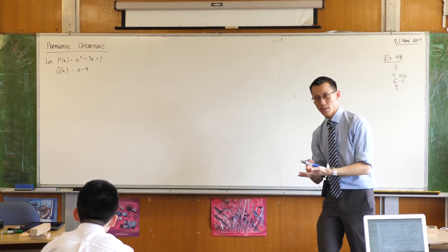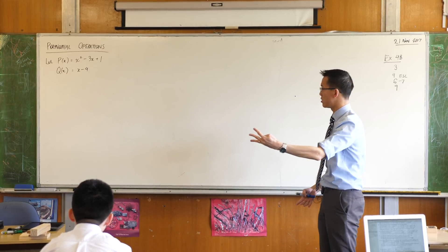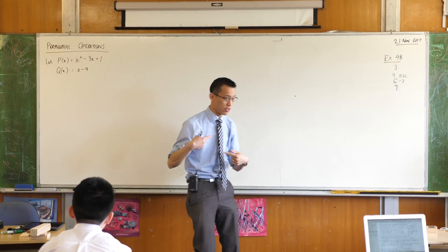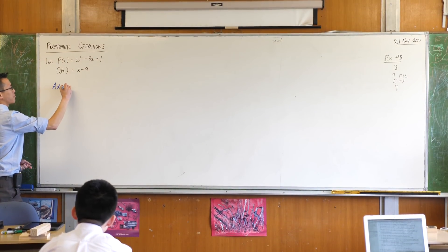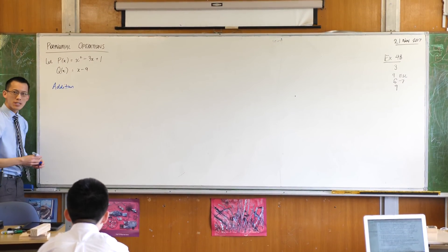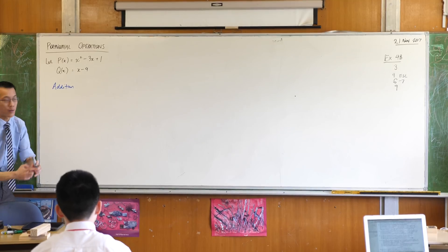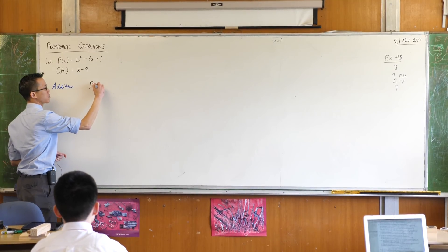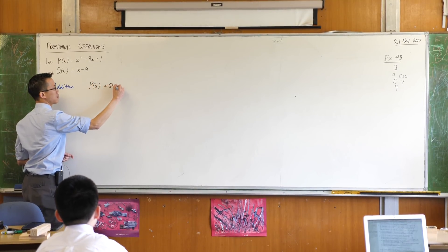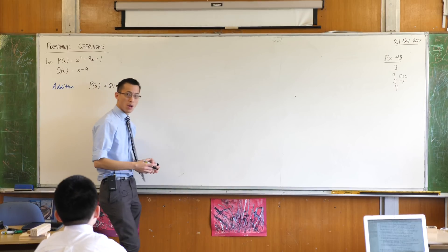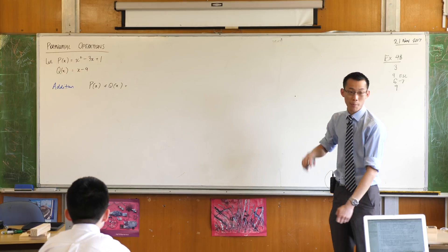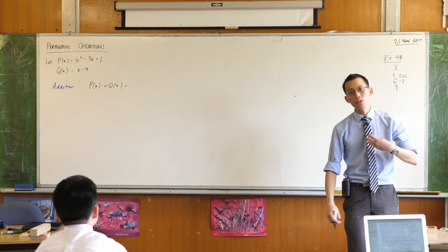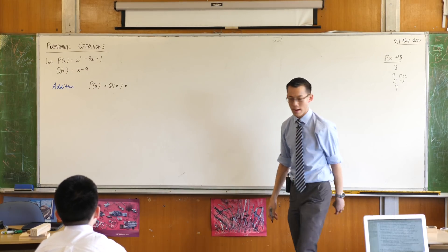Now just like with numbers there are four key operations that we can do with polynomials. I'll start you off, we can add them. So what does addition of these polynomials look like? If you say p of x plus q of x, then we can simply go term by term, we can collect like terms because there's a couple here that I can deal with and you get a new polynomial at the other end.